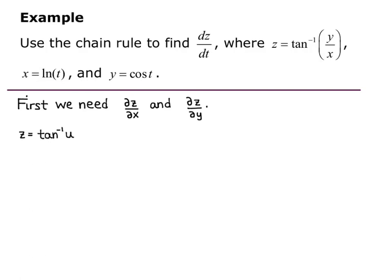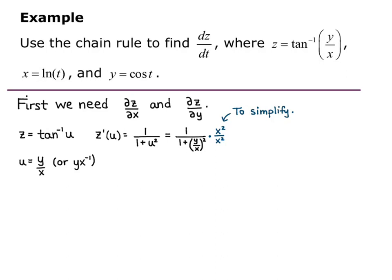So, z equals inverse tangent of u, where u is the inside function y over x, or y times x to the negative 1. So z prime of u equals 1 over (1 plus u squared) — this is the derivative of inverse tangent. And since u is y over x, this equals 1 over (1 plus (y/x) squared). To simplify, we multiply by x squared over x squared, giving x squared on top and x squared plus y squared on the bottom.